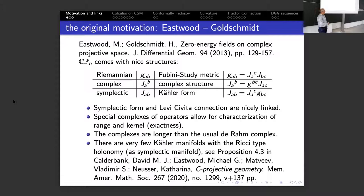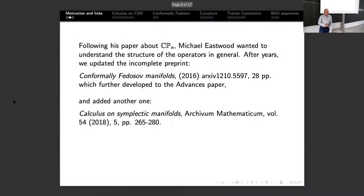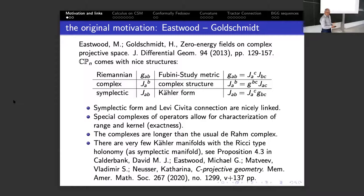So I'm talking about old stories today. The complexes are longer than the de Rham complex by one with respect to the real dimension — we shall come to that soon. The reason is that in some sense you can see the complexes as a pushdown of contact geometry complexes, which are one dimension bigger. Michael simply wanted to understand how and why this works, and wanted to see it for some reasonable category of geometries where CPn would be a distinguished example.